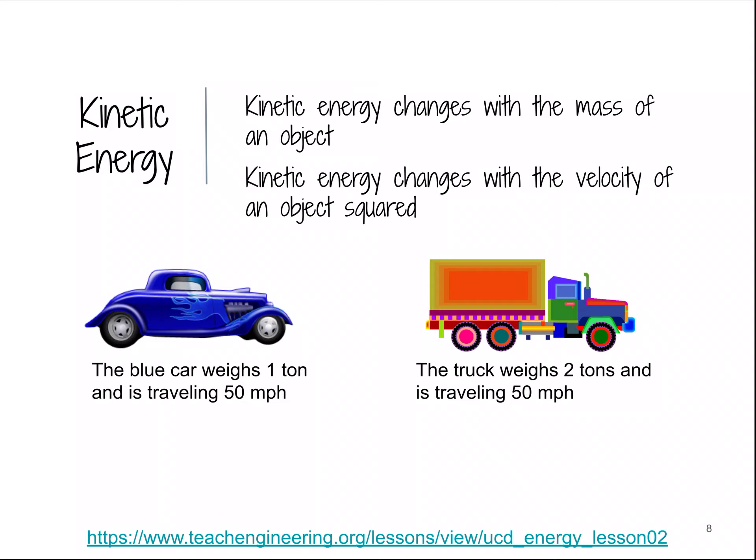First comparison. The blue car weighs one ton, traveling at 50 miles per hour. The truck weighs two tons and is traveling at the same speed of 50 miles per hour. So if the truck weighs twice as much, how much kinetic energy do you think this truck has compared to the blue car? Pause your video. When you're ready for the answer, press play. The truck has two times more kinetic energy as the blue car. So because it weighs twice as much, and kinetic energy and mass have a direct relationship, double the mass, you double the kinetic energy.